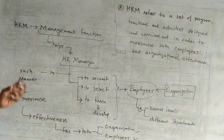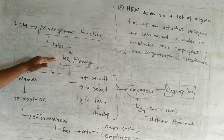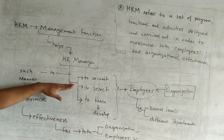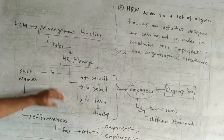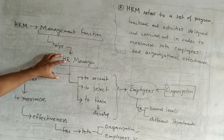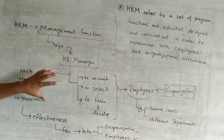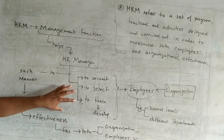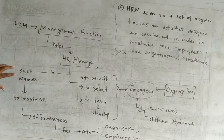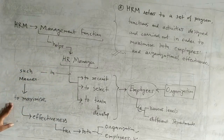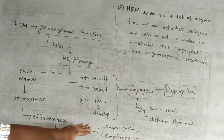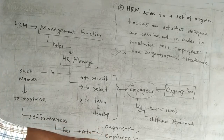Now one important thing is how the HR manager should perform recruitment, selection, and training. The HR manager should perform all these activities in such a manner that there is maximization of effectiveness for both the organization as well as the employees.